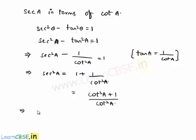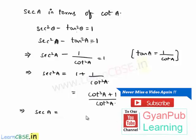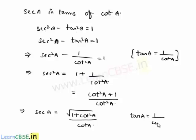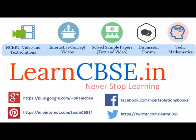That implies, by applying square root on both sides, we get secant a equals the square root of 1 plus cot squared a divided by cot a. He also asked us to express tan a in terms of cot a, which is simply 1 by cot a, as we already know.